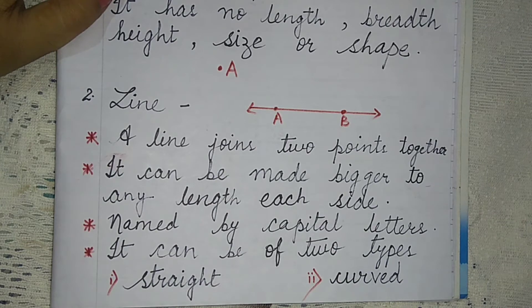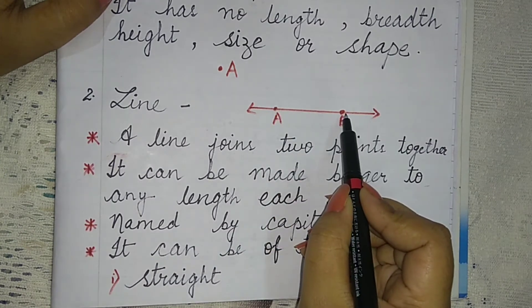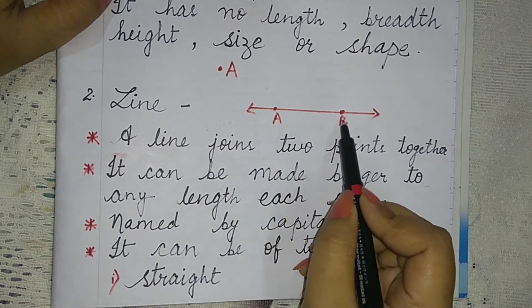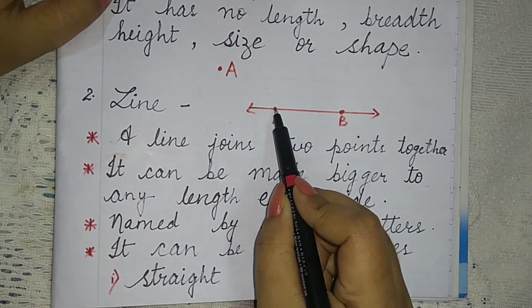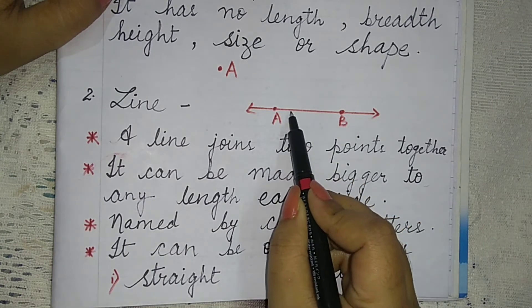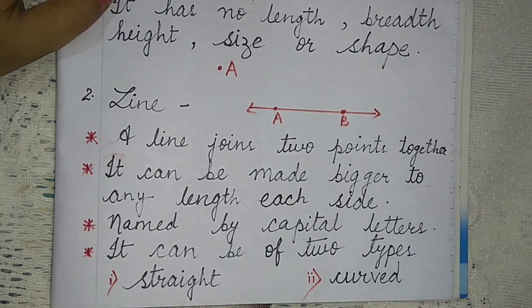A line can be of two types: one is a straight line, and one is a curved line. Here we have two points named A and B, and these two points are joined — it is called a line.